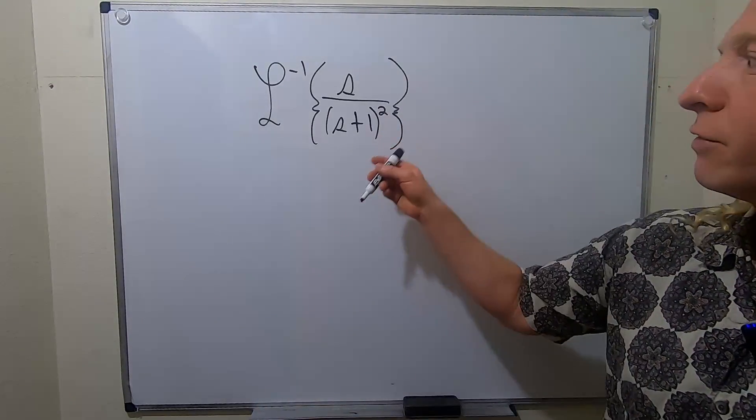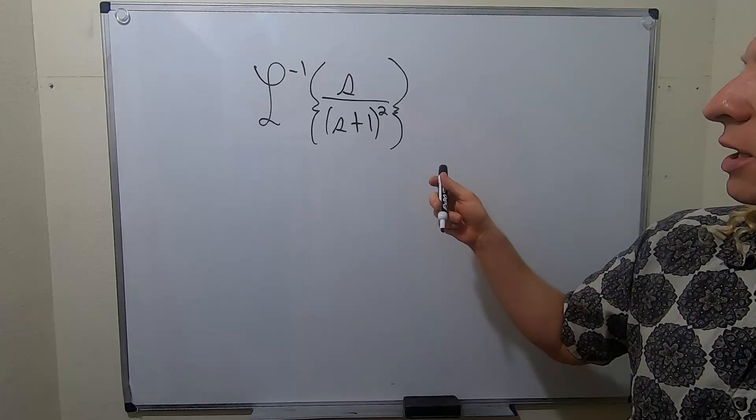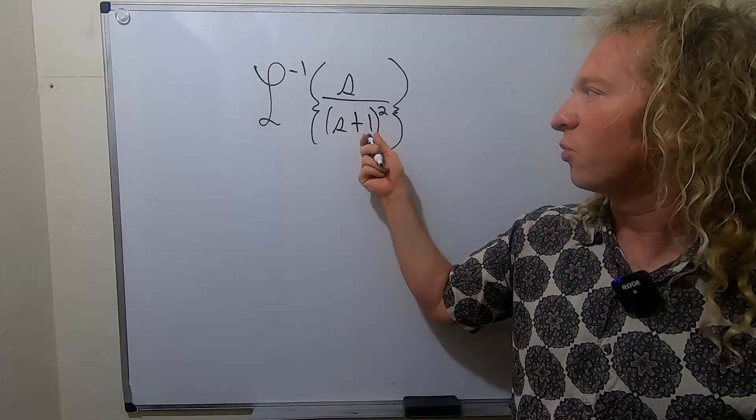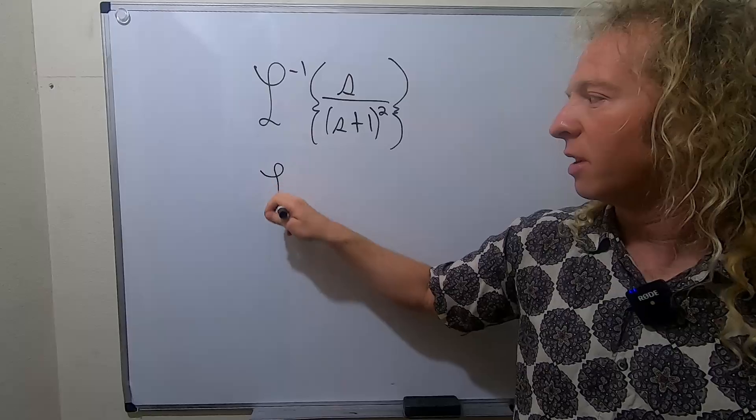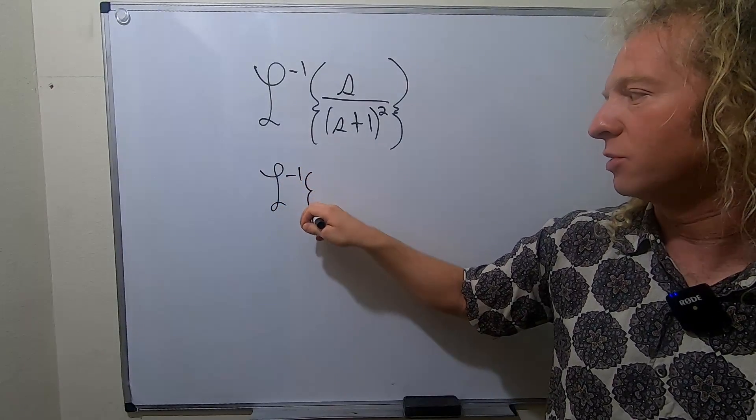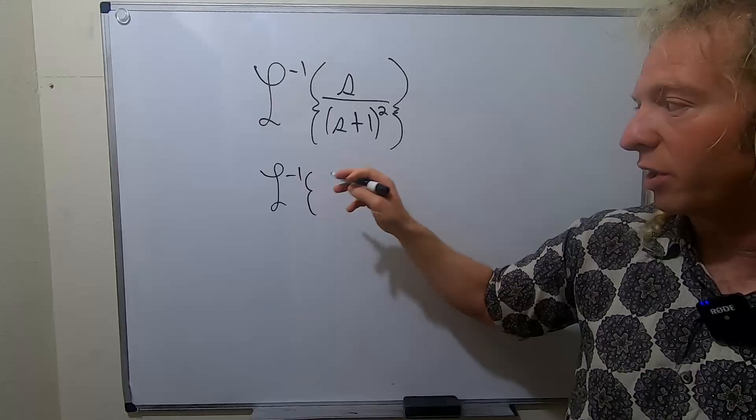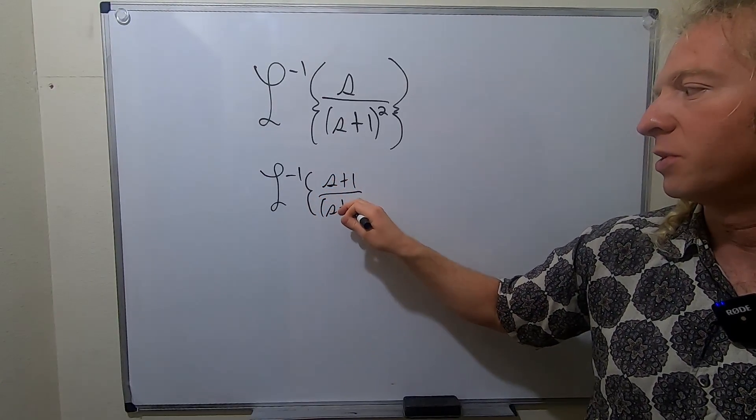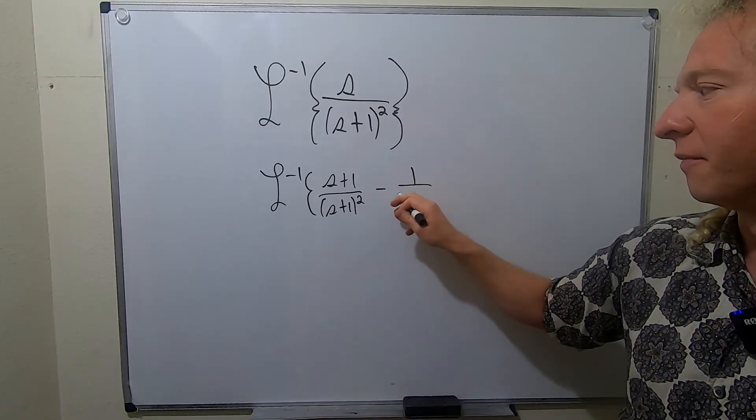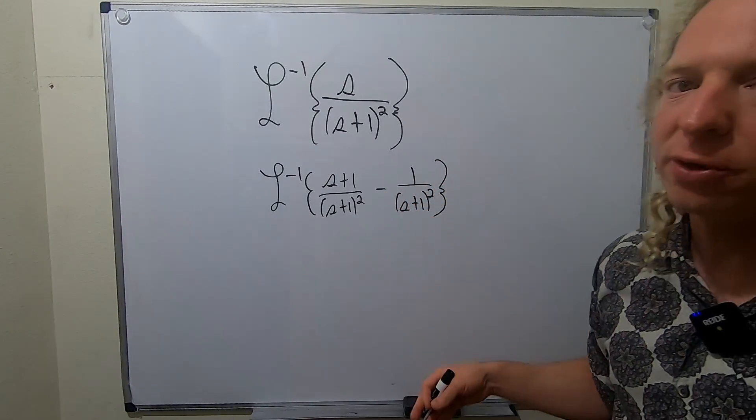In this video we're going to find the inverse Laplace of this. To do this there's a trick. Basically here you have s plus one, and in here there's an s. From doing lots of problems you come to the conclusion that it would be really nice if you can make this an s plus one. So what you do is you write (s+1) over (s+1)² and then you take it away. This just comes up a lot, something that you do over and over again.